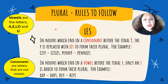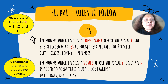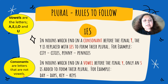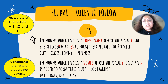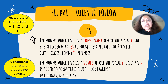Before knowing the rules to follow with IES, we need to know the difference between vowels and consonants. Vowels are the letters A, E, I, O, U and consonants are the letters that are not vowels — for example B, C, D, F and so on. In nouns which end in a consonant before the final Y, the Y is replaced with IES to form their plural. For example: city, cities.